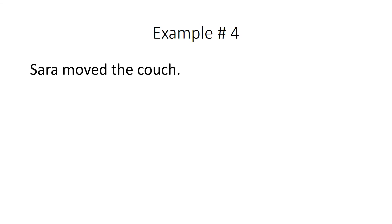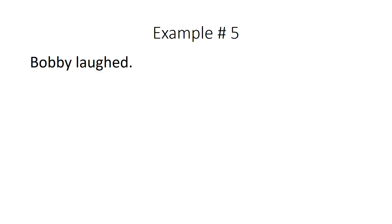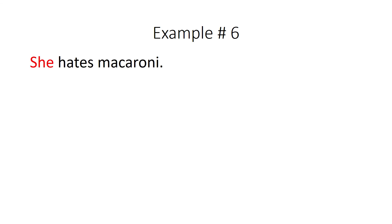Example four: 'Sarah moved the couch.' Sarah is the subject, moved is the verb, and everything following it is the predicate. Example five: 'Bobby laughed.' Bobby is the subject, laughed is the verb — the predicate. Notice it's just a subject and a verb, but it works, because a simple sentence can simply be one subject and a verb. Example six: 'She hates macaroni.' She is the subject and hates is the verb — the action. Hates is an abstract verb; you can't see or touch it, but you understand it with the mind. So 'hates macaroni' is the predicate — simple sentence.